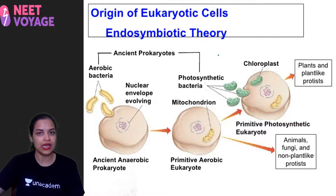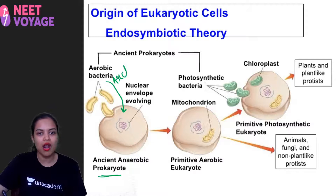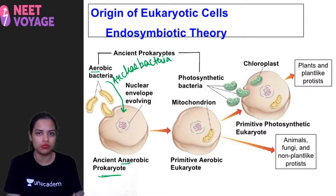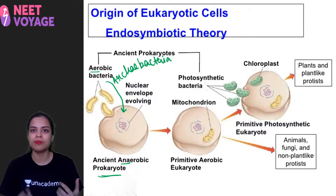Now let's see the origin of the eukaryotic cell by endosymbiotic theory. First there was an ancient anaerobic prokaryote. Aerobic bacteria — specifically archibacteria — entered inside it. Small aerobic prokaryotes are thought to have entered and lived inside larger anaerobic prokaryotes. Later, additional small photosynthetic prokaryotes — cyanobacteria — are also thought to have entered and lived inside, forming chloroplast and mitochondria.